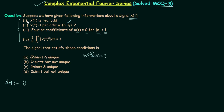The first information says xt is a real and odd signal. From the xt–cn pairs, we know that when xt is real and odd, cn is imaginary and odd.